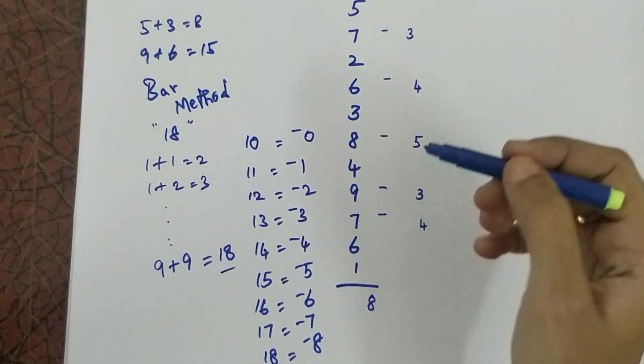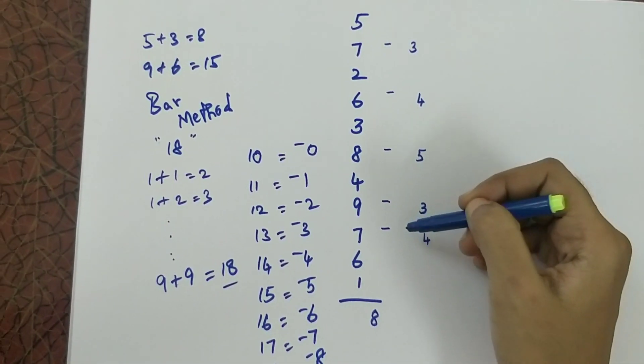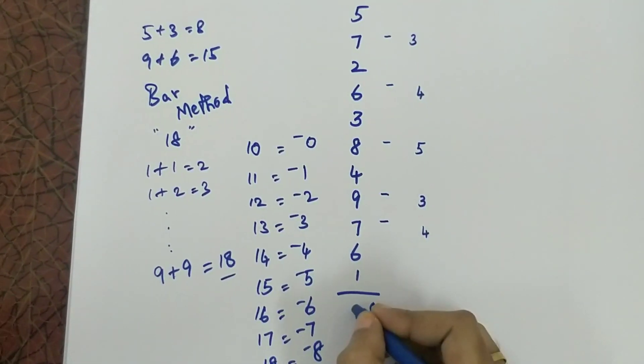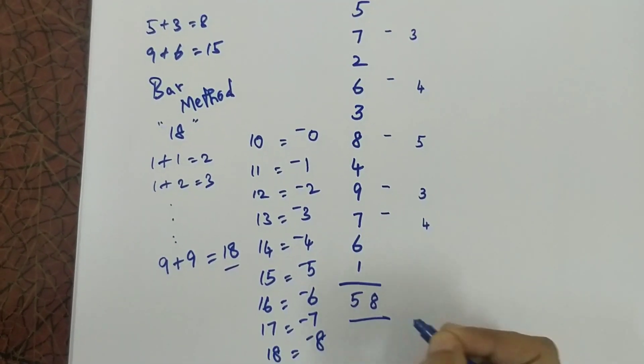Now I have to count how many bars are there. 1, 2, 3, 4 and 5. So my answer will be 58.